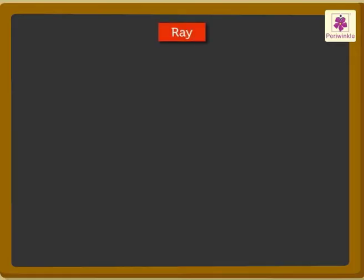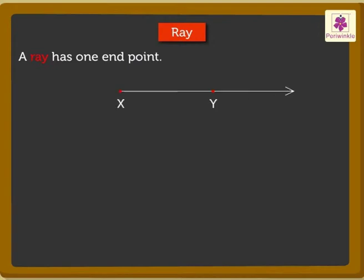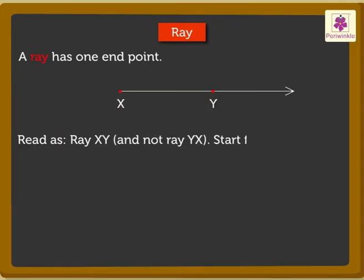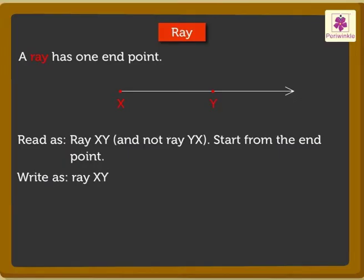Next is ray. A ray has one endpoint and can be extended only in one direction. It can be read only as ray XY and not ray YX, as we start from the endpoint. We write it as ray XY, or with the symbol of the ray above the letters.